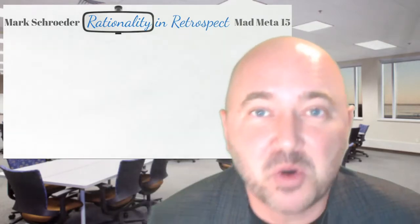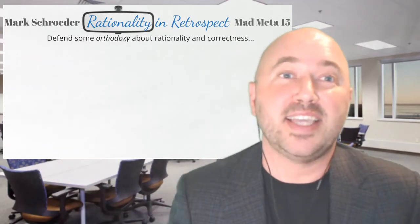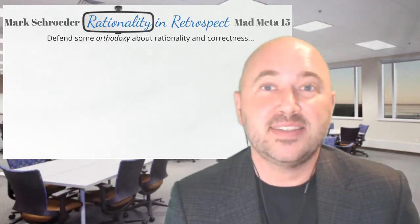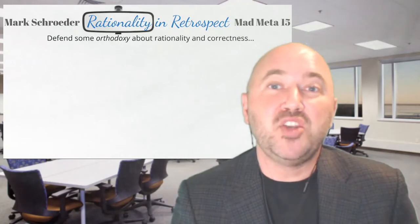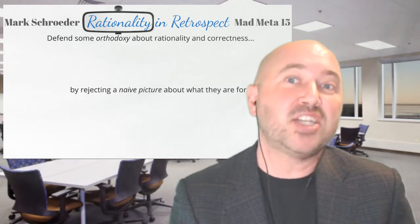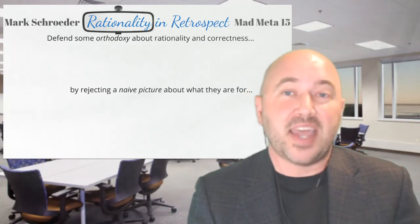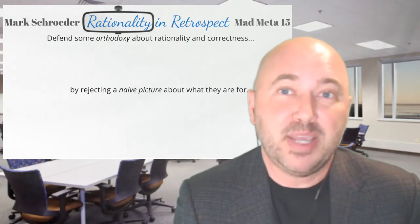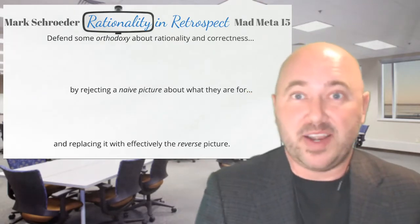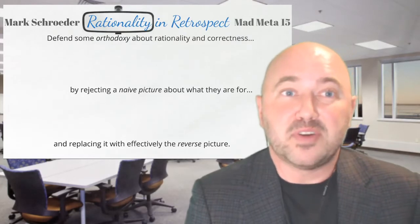My main goal for the talk is to defend some orthodoxy about the relationship between rationality and correctness. And I'm going to do it by rejecting what I call a naive picture about what rationality and correctness are for. The way I'm going to reject that picture is to try and share things exactly the opposite way around and defend the reverse of the picture.